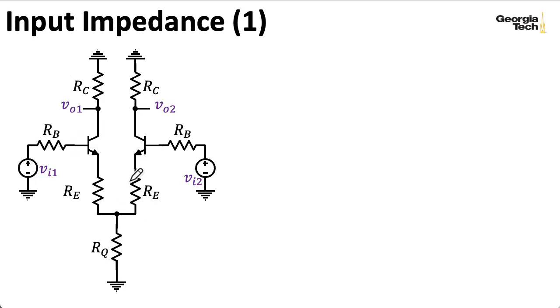And the input impedance, well, we need to think about where we're going to take it. I'm going to take it looking into RB here. So I'll have RB in series with RIB, which is the input impedance seen looking into the base of this BJT. And here's the expression for RIB. It's Rpi plus RTE times 1 plus beta. And we've already computed RTE.